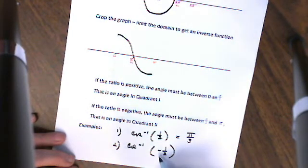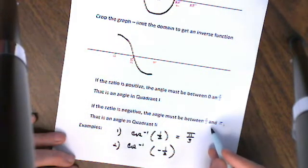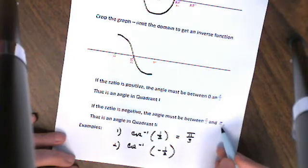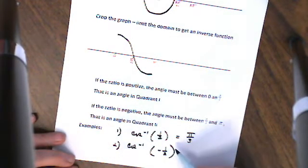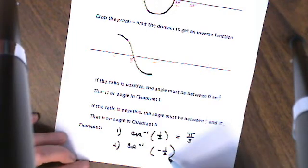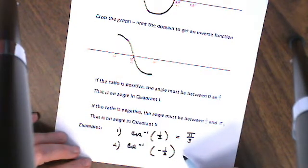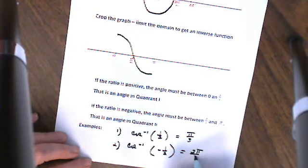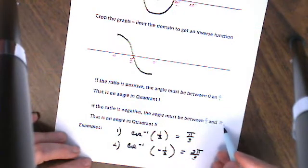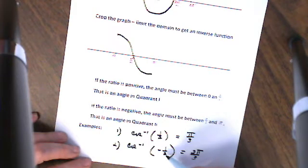Moving on to example 2, I have the same ratio but it's negative. This gets a little tricky, because the angle has to be an angle whose terminal side falls in quadrant 2, or between positive pi over 2 and pi. In order to get an angle in quadrant 2, I need to use a reference angle. If this were positive, the angle that produces that ratio is pi over 3. But now pi over 3 is the reference angle in quadrant 2. So I take pi and subtract pi over 3 from pi, and that gives me 2 pi over 3. And 2 pi over 3 is an angle between pi over 2 and pi that produces a negative ratio for cosine — it is located on my cropped graph, so it is legitimate.